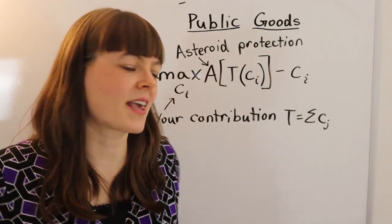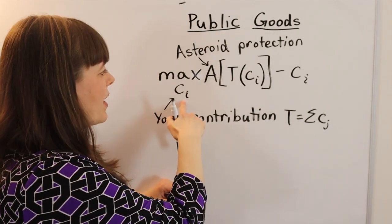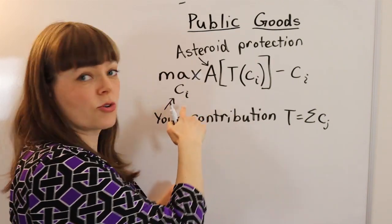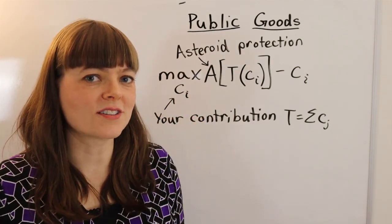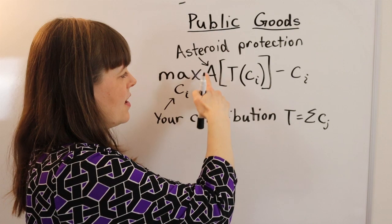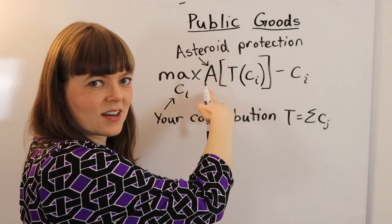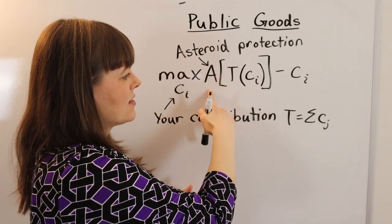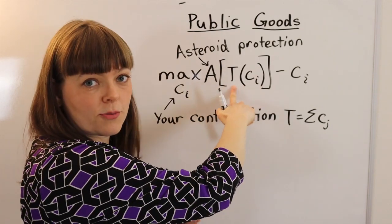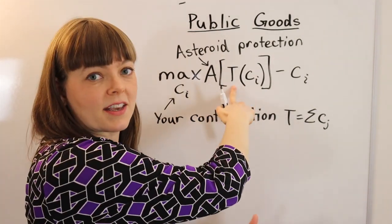So what does this look like in a model? Well, basically, here we have the person deciding how much money do you contribute to the cause of asteroid protection, where the total amount of protection that we have from asteroids depends on the total contributions of everybody's money contributed.